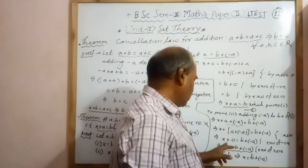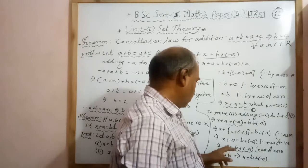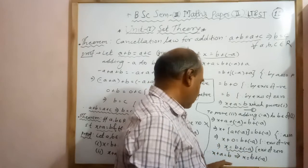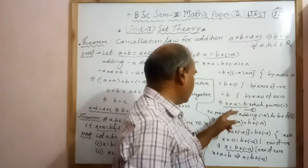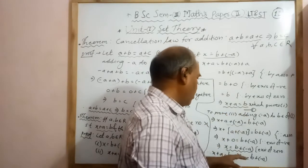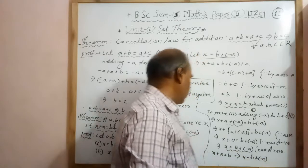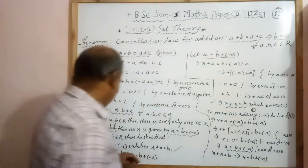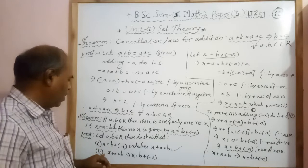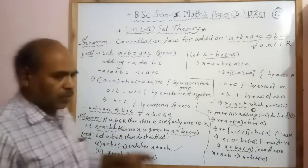By the existence of zero, when we add x plus 0, we get x equals b plus minus a. Therefore, starting from x plus a equals b, we arrived at x equals b plus minus a. We have proved both the first and second parts, and therefore the theorem is proved.